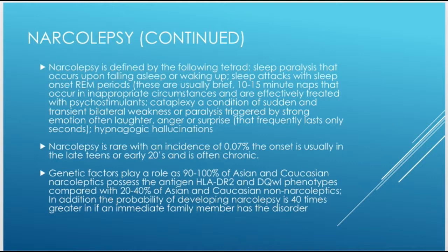The fourth element is hypnagogic hallucinations — hallucinations that occur as you're falling asleep. Narcolepsy is rare, with an incidence of approximately 0.07%, and onset is usually in the late teens or early 20s. It is often chronic — once someone develops it, it tends to follow a chronic course.